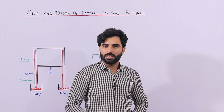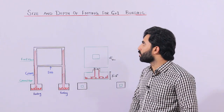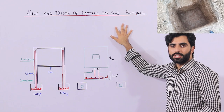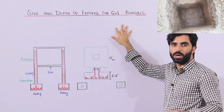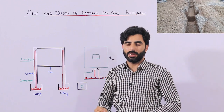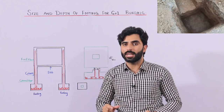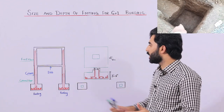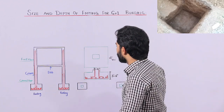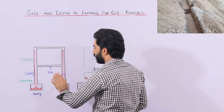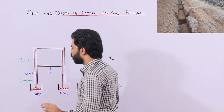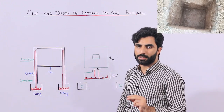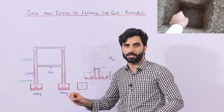Assalamualaikum guys. In this short video lecture I will guide you for the size and depth of footing for a G+1 story residential building. If you want to build your house and you don't know about the size and depth of footing — if you are not an engineer — I will cover size, depth, steel reinforcement, and construction of RCC footing. G+1 means ground floor plus first floor, so this is called a two-story residential building. I am telling you for residential building, not commercial building.